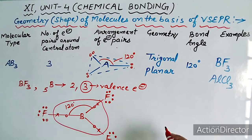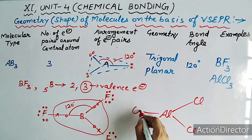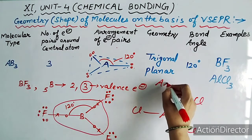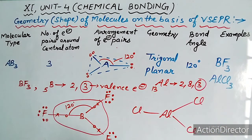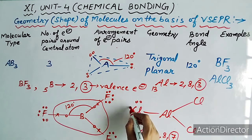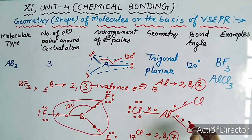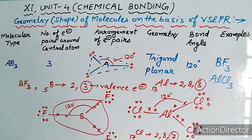Similarly AlCl3 की भी same molecular shape होती है — trigonal planar। Aluminium का atomic number 13, electronic distribution 2,8,3 — last shell में 3 electrons। Chlorine का atomic number 17, electronic distribution 2,8,7 — last shell में 7 electrons। Bond angle यहाँ से भी 120 degree जाता है, so the shape is trigonal planar।